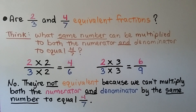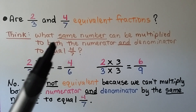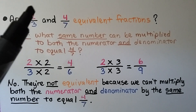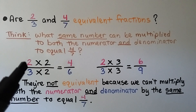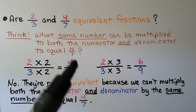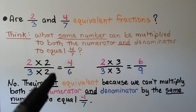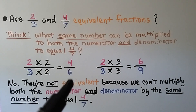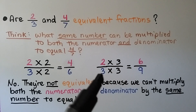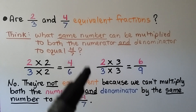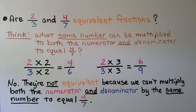Are two-thirds and four-sevenths equivalent fractions? We think: what same number can be multiplied to both the numerator and denominator to equal four-sevenths? To get the numerator four, we can multiply two by two — two times two is four. But then we need to multiply the denominator by two, and that gives us six, not seven. So that didn't work. If we try the number three, we get two times three is six and three times three is nine. We can't get to four-sevenths. They're not equivalent because we can't multiply both the numerator and denominator by the same number to equal four-sevenths.